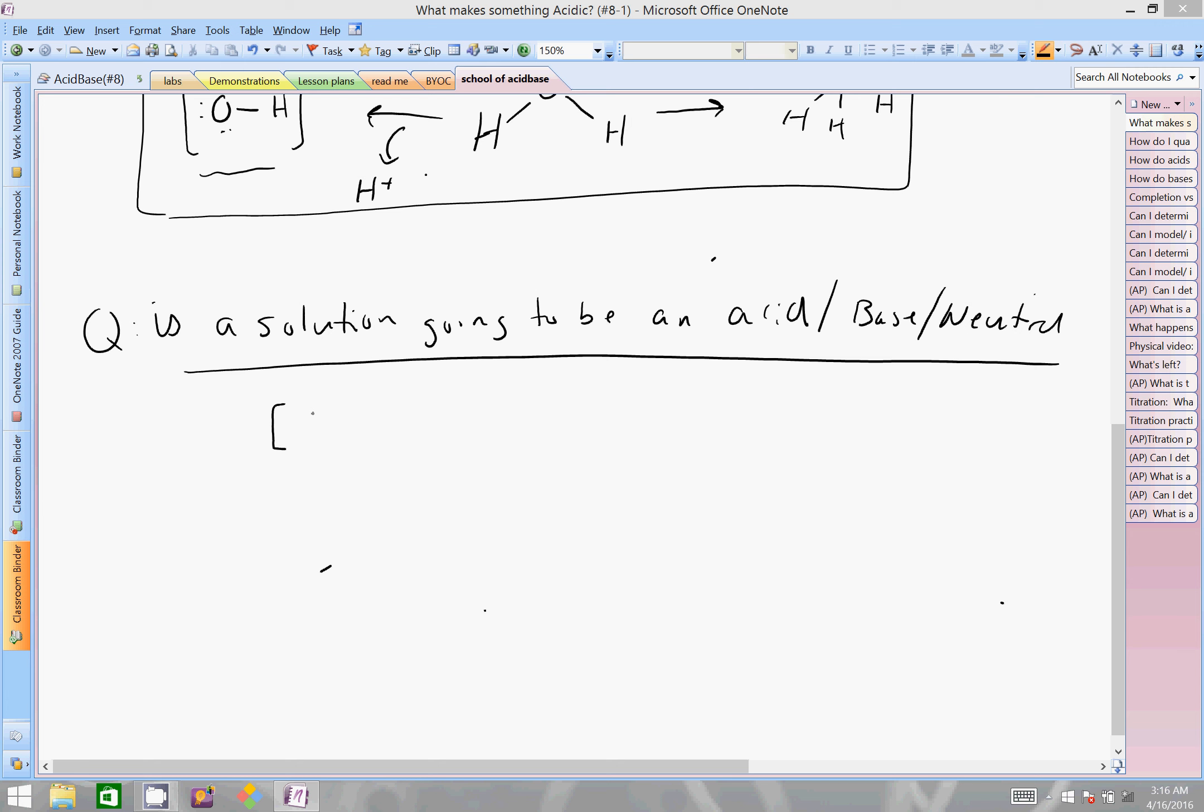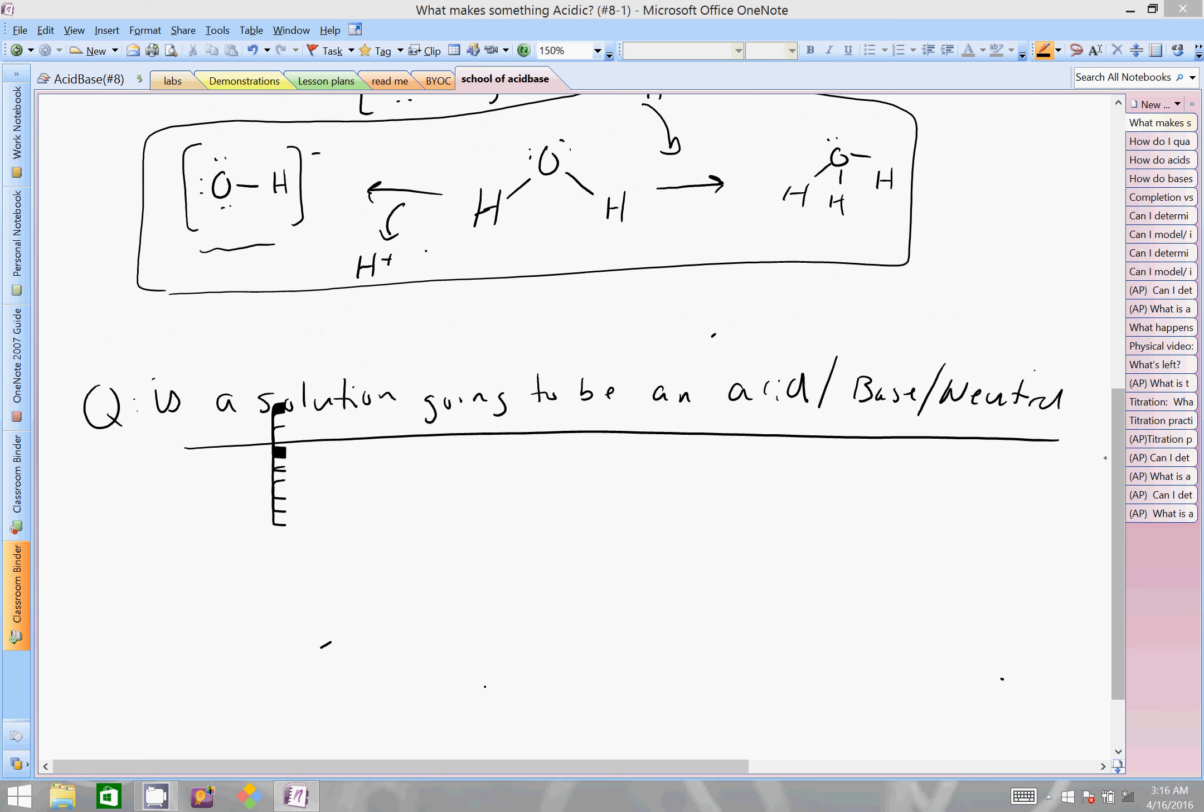So my pen's not working. In this case, we'll wrap this up quickly here then. The H+ ions have to be greater than the hydroxide ions and we'd be acidic. And if the hydroxide ions are greater than the H+ ions, then we would be basic. There we go. And if they're equal, then we'd be neutral.